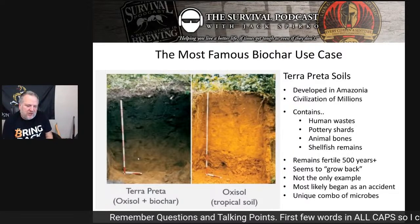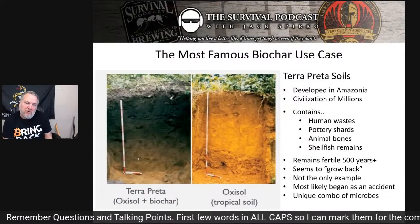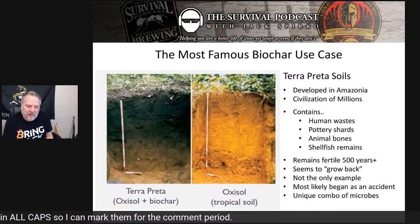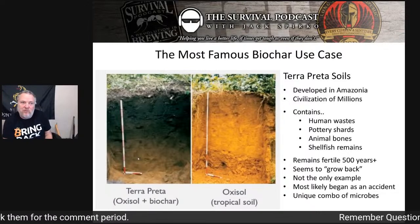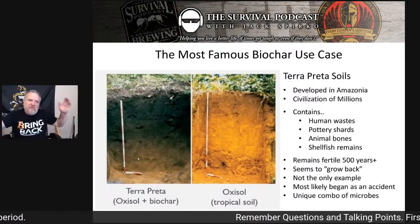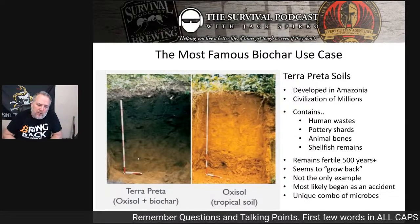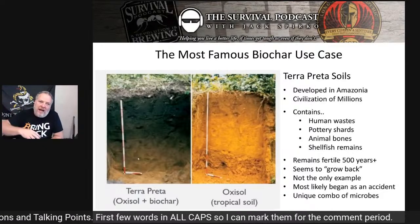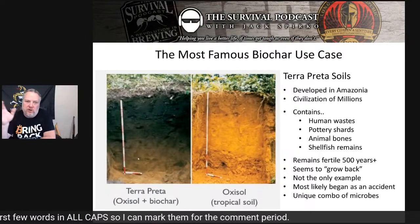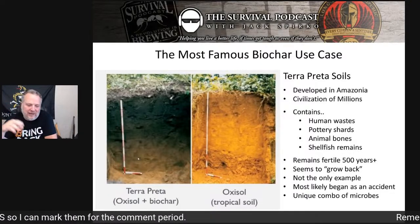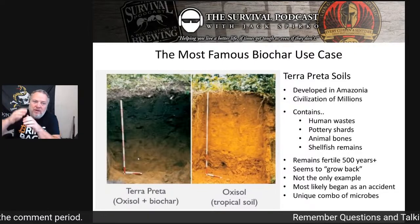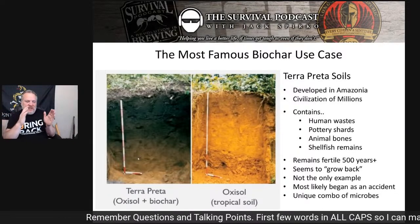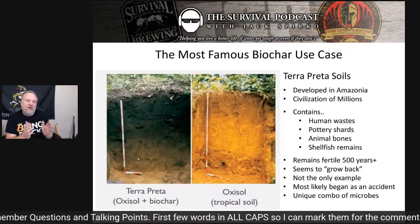Terra preta allowed civilizations of millions of people to live on land that we previously didn't believe had millions of people living on it. One of the early Spanish explorers floated down the entire Amazon River back in the 1500s. When they got back, they described these massive cities. Nobody believed them — there was no way to grow enough food in those places, was the thinking. It was almost 100 years before anybody went back to check it out, and they said there's nothing here, these people lied. Because they described buildings upon buildings all the way down the river, floating for a mile and never seeing two buildings not touching each other.